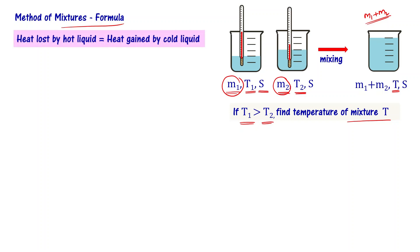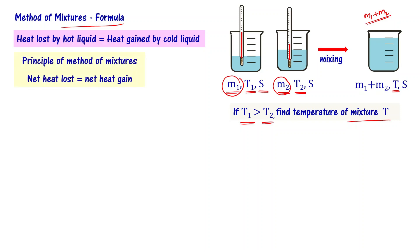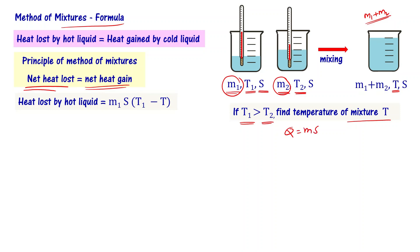We know that heat lost by the hot liquid equals heat gained by the cold liquid. When hot and cold bodies are in thermal contact, heat transfers from the hot body to the cold body. The hot body loses some amount of heat, and that same amount of heat is gained by the cold body. This is the principle of method of mixtures: the net heat lost by the hot body equals the net heat gained by the cold body. Heat lost by the hot liquid is M1 times S times (T1 minus T).